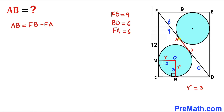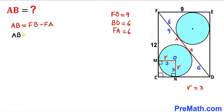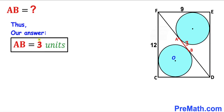For our final step: length AB equals the whole length FB minus length FA. So AB equals 9 minus 6, which gives AB equals 3 units. Thanks for watching and please don't forget to subscribe to the channel for more exciting videos.